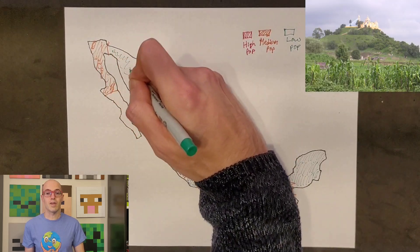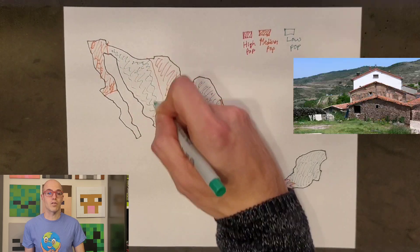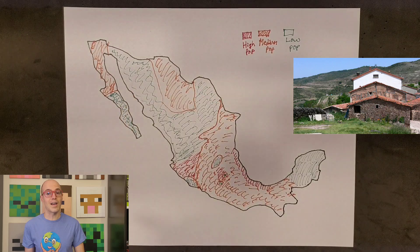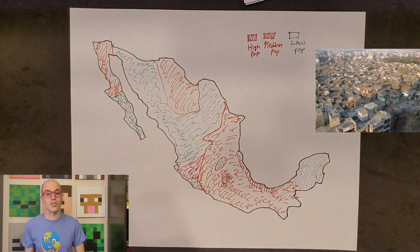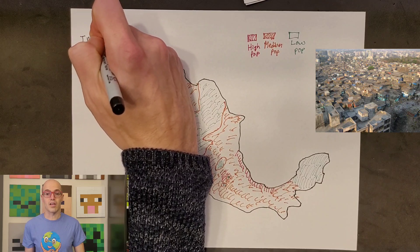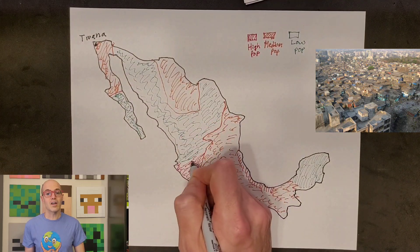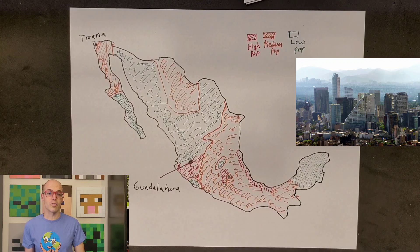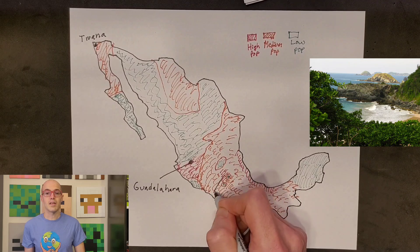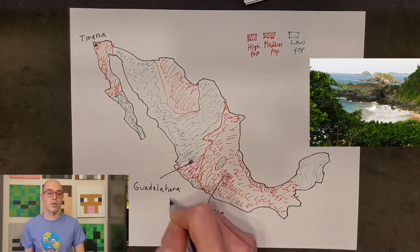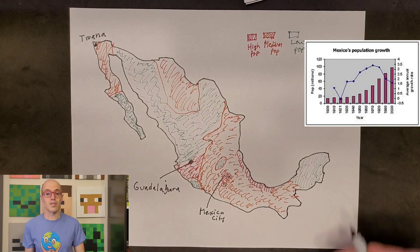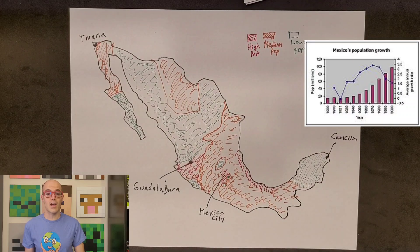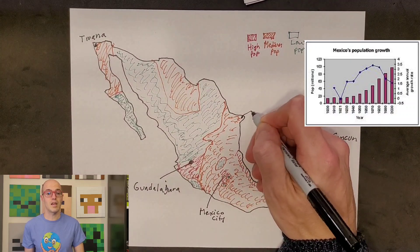Despite urbanization, rural areas still hold significant populations, contributing to Mexico's vibrant mosaic of communities. Mexico has a population density that varies widely across its regions. The central region, including Mexico City and its surrounding areas, is the most densely populated. In contrast, northern and southern regions are generally less populated, characterized by rural areas and agricultural land. Overall, Mexico's population density has been steadily increasing due to urbanization and migration, posing both challenges and opportunities for the country's development and infrastructure.